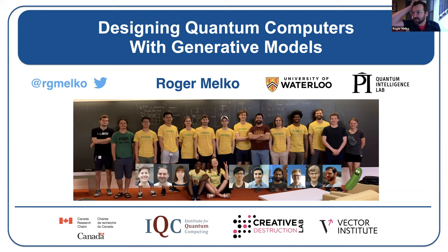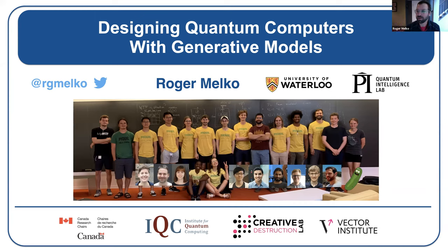One thing I'm doing with my spare time is helping Perimeter Institute launch an AI lab — the Perimeter Institute Quantum Intelligence Lab. It's really a group of condensed matter theorists and quantum information scientists at Perimeter, loosely associated with Juan Carrasquilla's group at Vector Institute, interested in using machine learning to advance condensed matter and quantum information.